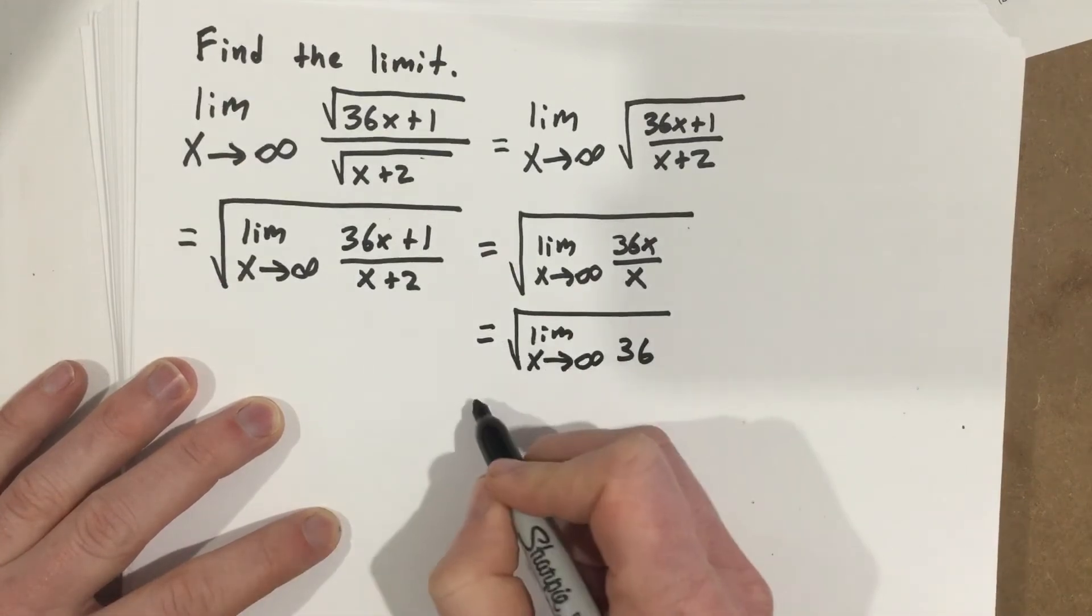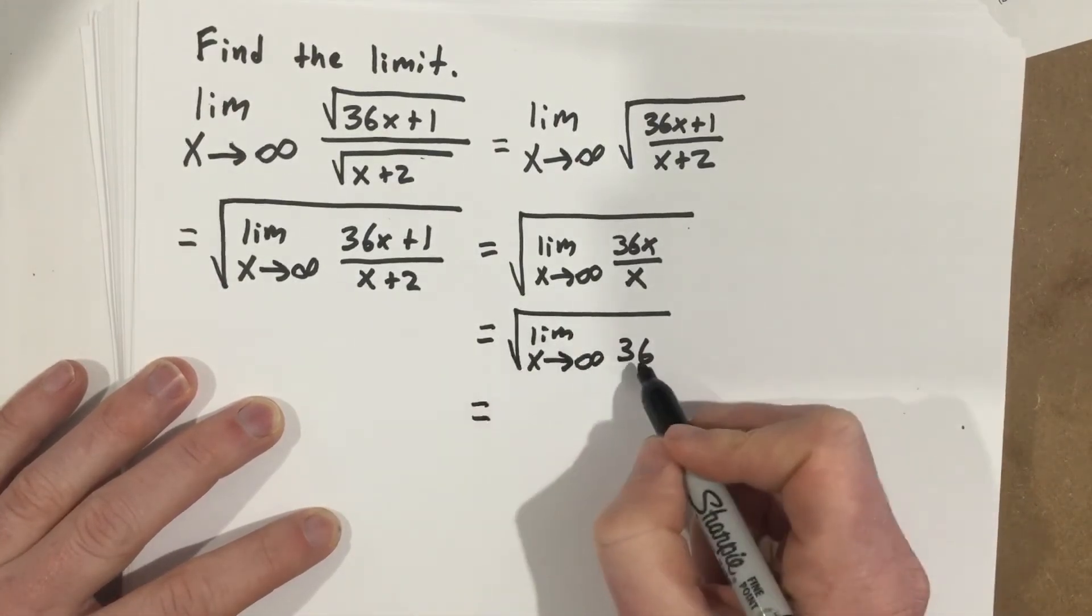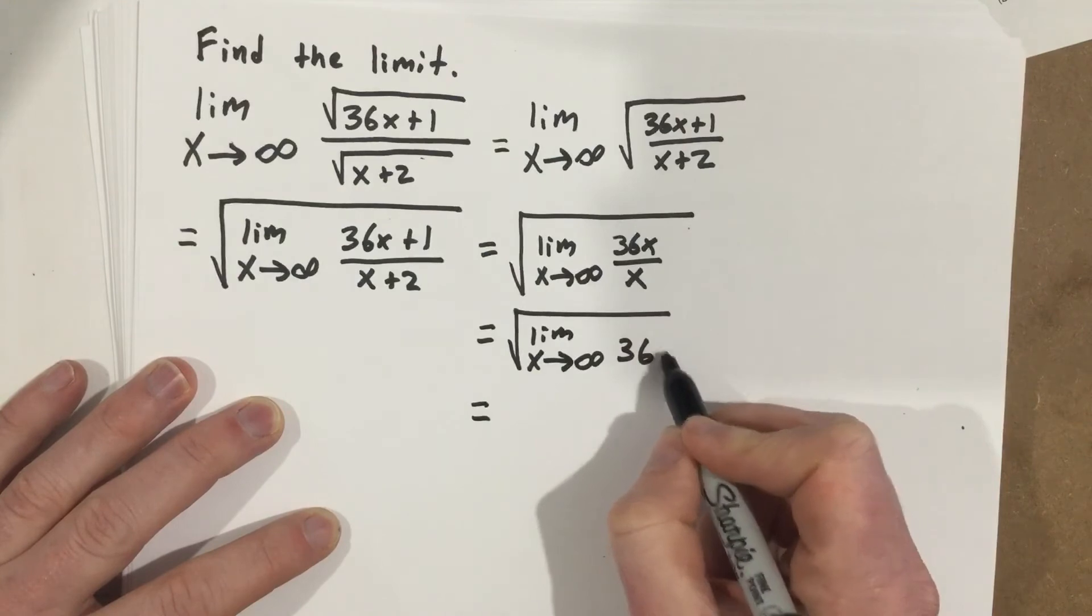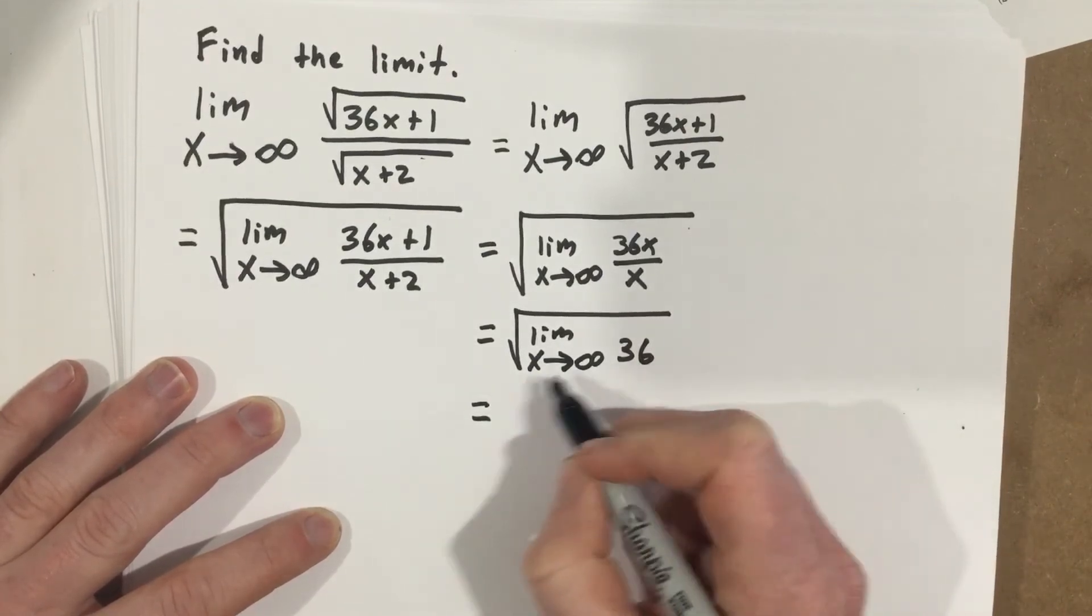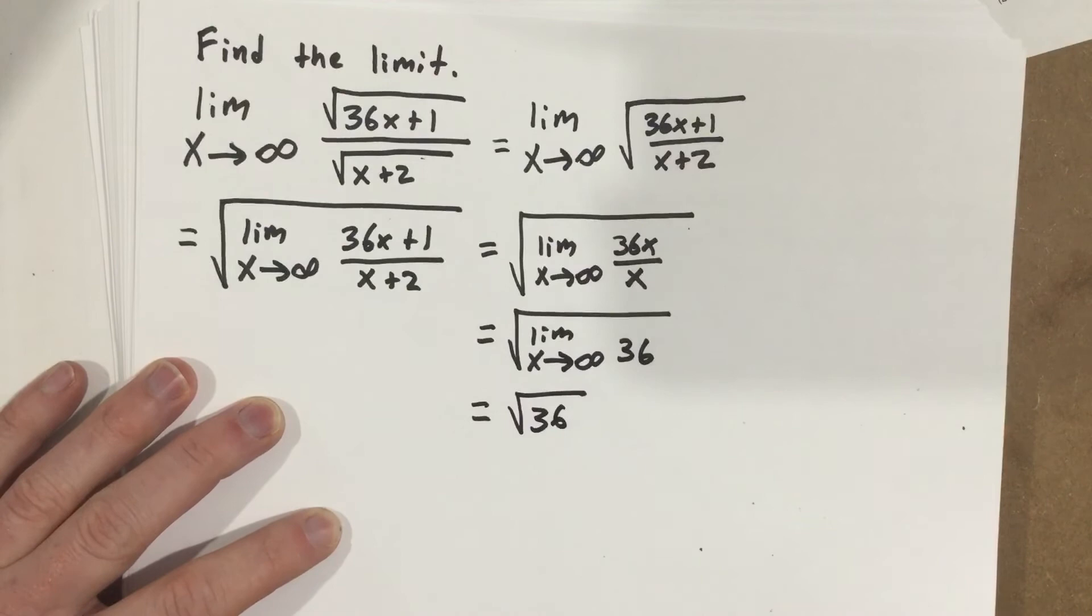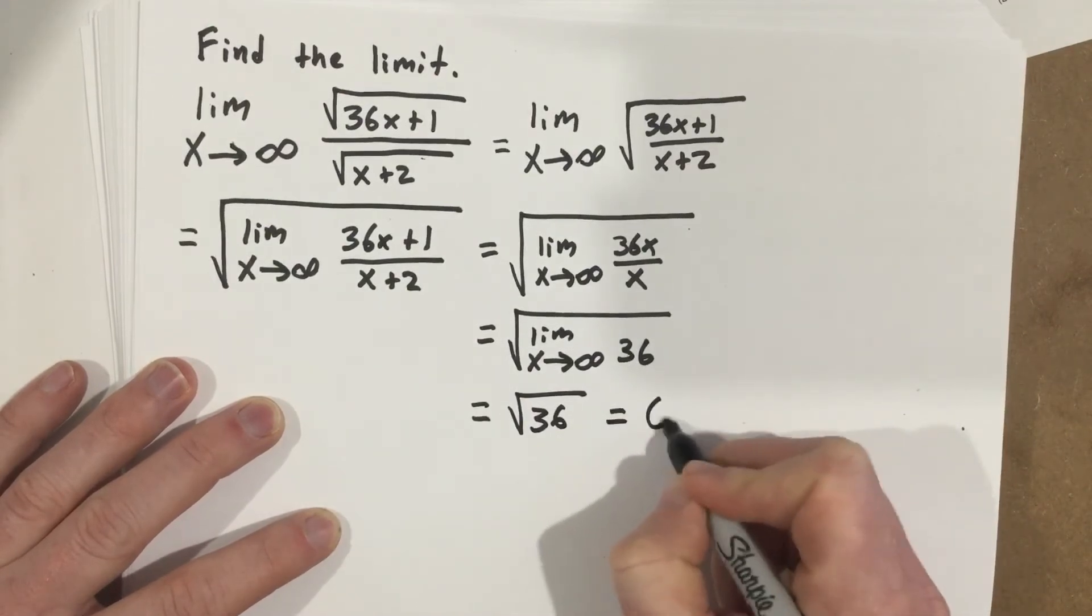At this point we can say that when we take the root of this, if I plug in infinity, there's no variable there. So it's just root 36, which means we get 6.